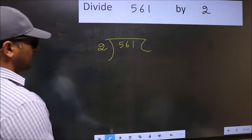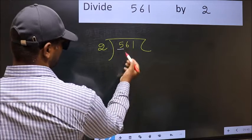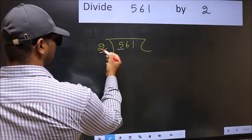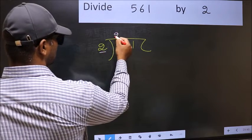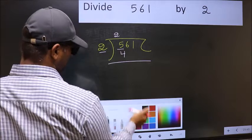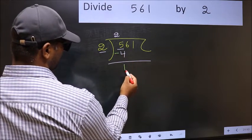Next. Here we have 5 and here 2. A number close to 5 in 2 table is 2 2s, 4. Now you should subtract. 5-4, 1.